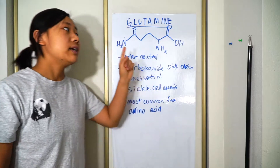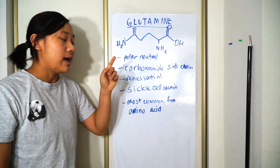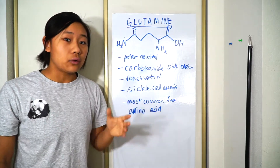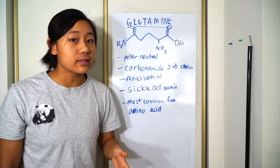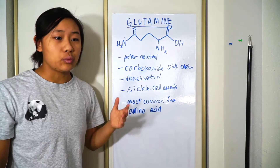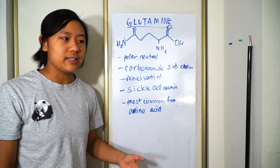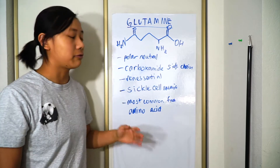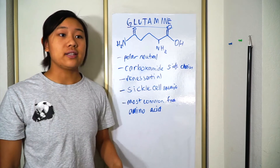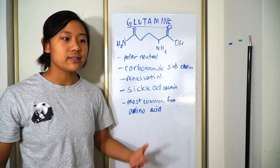However, glutamine is different, and if you take it orally, apparently it helps with sickle cell anemia. The reason why this helps is because glutamine is the most common free amino acid in our bodies.